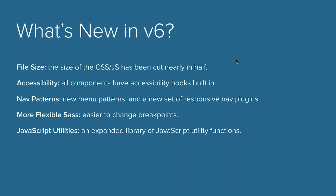Accessibility is also a big push for this version of Foundation. All components have accessibility hooks built in. They are A11y-friendly. You can look A11y up if you're interested in learning more about compatibility and accessibility. You can use the ARIA hooks built in for all of our components to make sure that you can use things like keyboard shortcuts for folks who aren't able to see or aren't able to use a mouse. There are things in there that allow you to easily read the content and other great accessibility features.